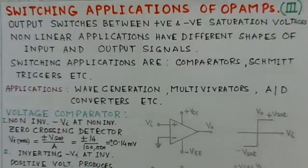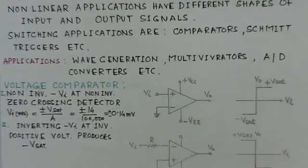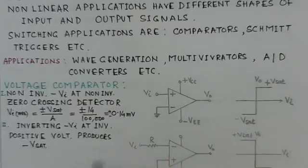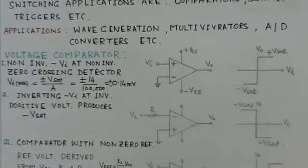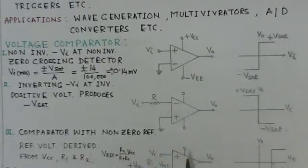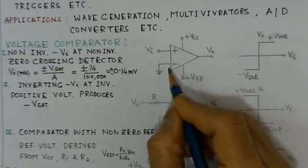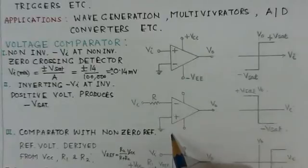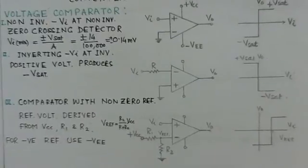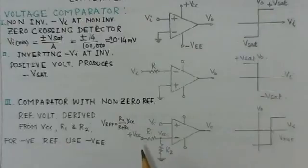The other voltage comparator is the inverting comparator, where VI is put at the inverting terminal. A positive voltage here will produce minus V-saturation, as indicated by the transfer characteristics. The third type of circuit is a comparator with a non-zero reference. Since the previous circuits used a zero reference level, to make a comparator with a non-zero reference you use a suitable potential divider network to get a desired reference voltage.